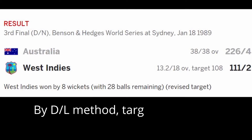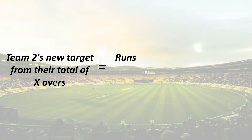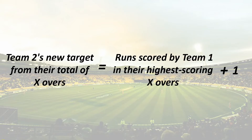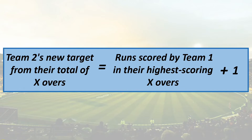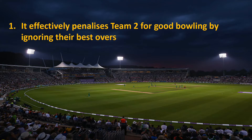After that match, the ARR method was highly criticized by media and Australian captain Allan Border, leading to the development of another method called the Most Productive Overs method, or MPO method. This sets the revised target as: team 2's new target for X overs equals runs scored by team 1 in their highest-scoring X overs, plus 1. While the ARR method highly favored the team batting second, the MPO method favored the team batting first. It effectively penalizes team 2 for their good bowling by ignoring their best overs, since the target depends only on the worst X overs bowled by team 1.